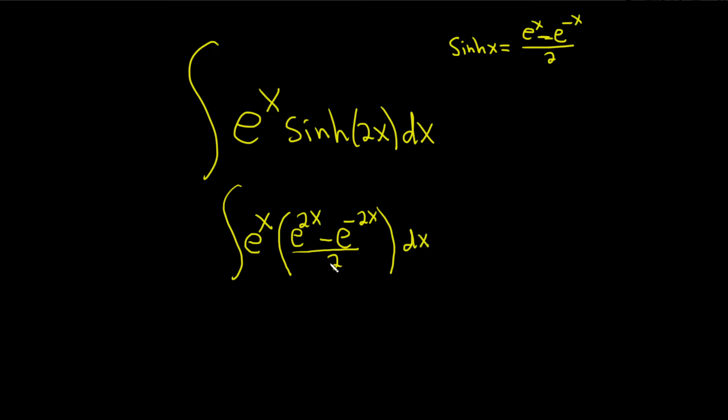Okay, let's pull out this one-half, and let's go ahead and distribute the e to the x. So e to the x times e to the 2x. Well, what happens here is we add the exponents.